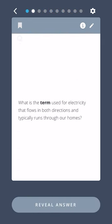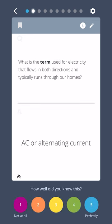What is the term used for electricity that flows in both directions and typically runs through our homes? AC or alternating current.